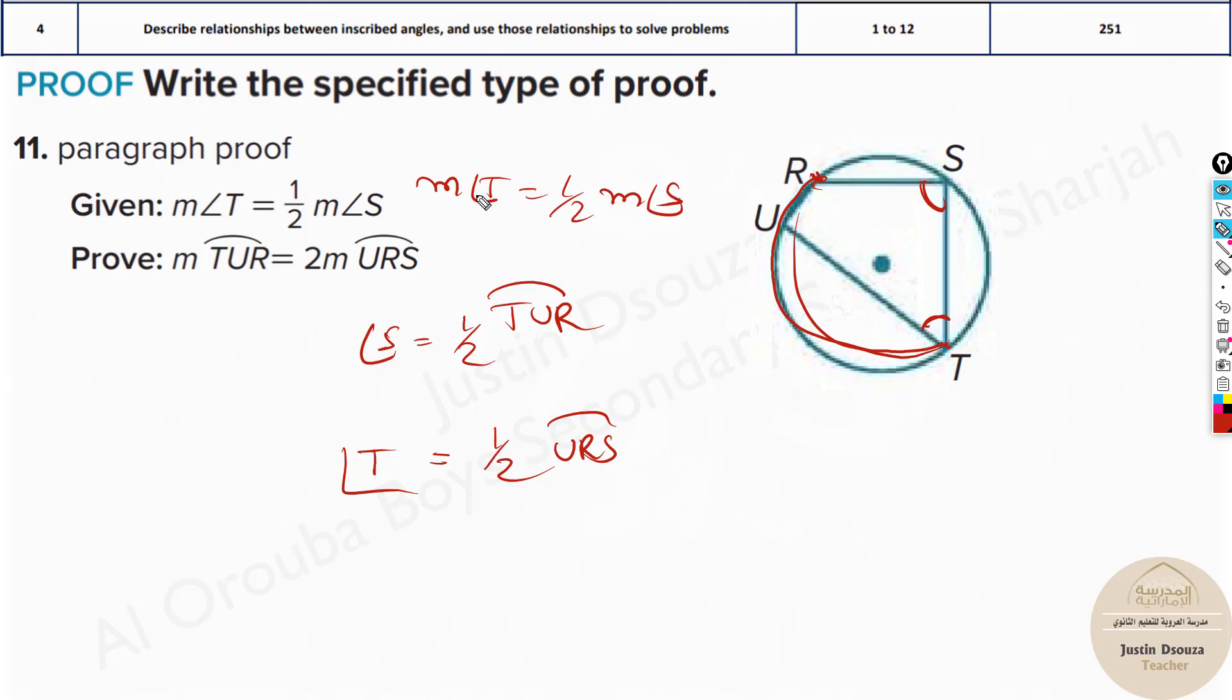So substitute in the given. What is going to happen is, measure of angle T, it will be half URS equals, what is the measure of angle S? It is again half, already there is half, multiplied by half TUR. Now let's multiply throughout by 2. This half cancels out. So it will be arc URS equals half, and this cancels, you are remaining with half TUR.